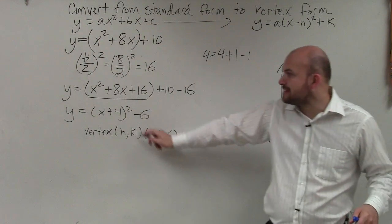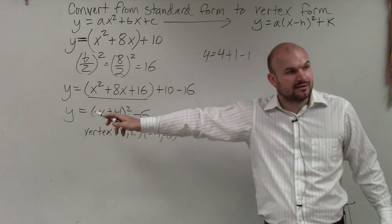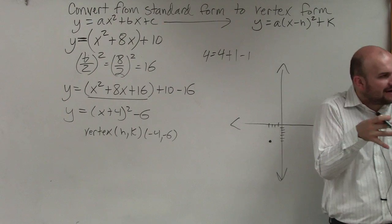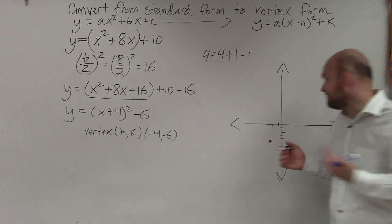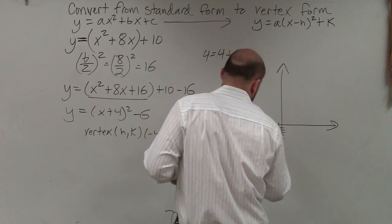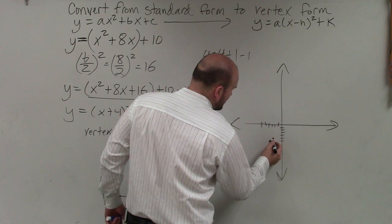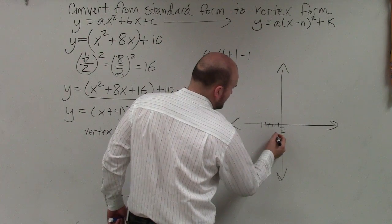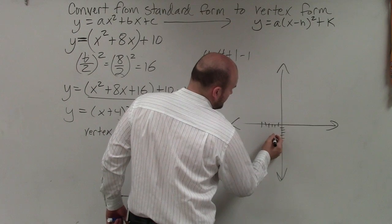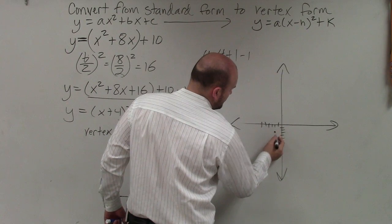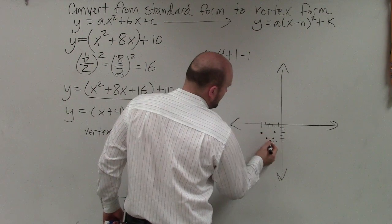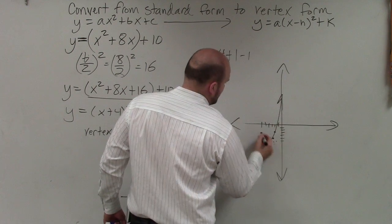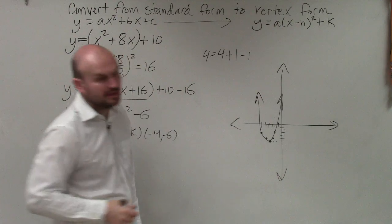And then I notice that my a is equal to 1. There's no dilation of the graph. So therefore, I can just apply what the parent graph is, which is over 1, up 1. Over 2, up 4. Over 1, up 1. Over 2, up 4. And then done.